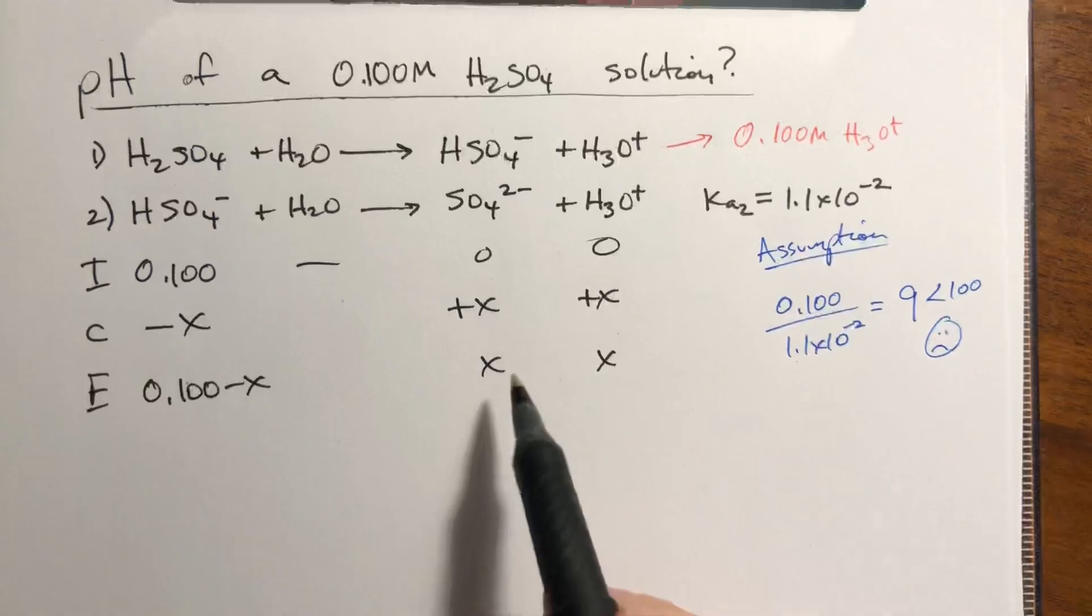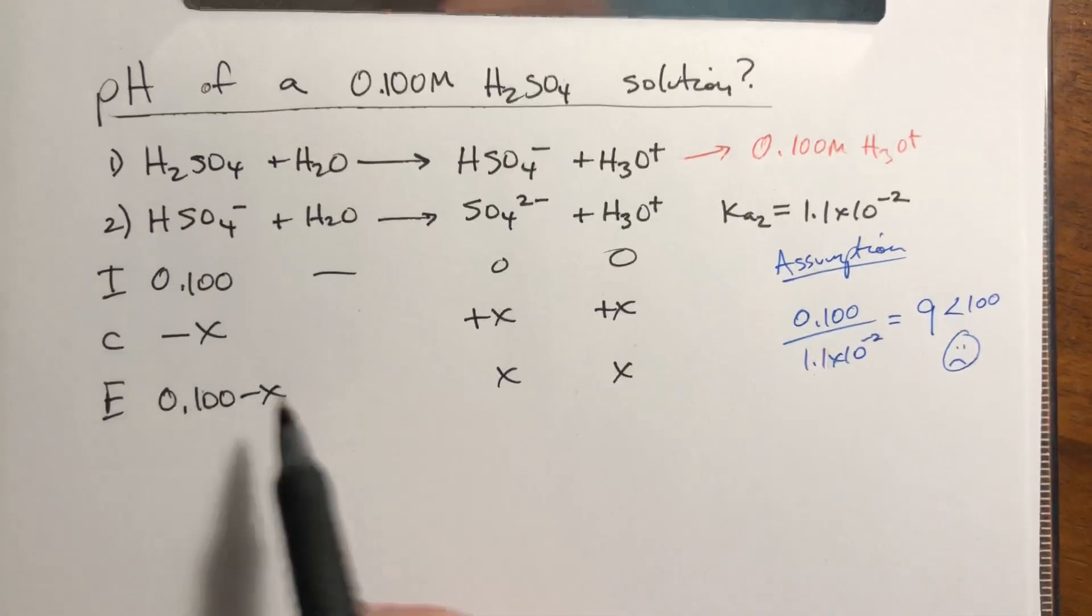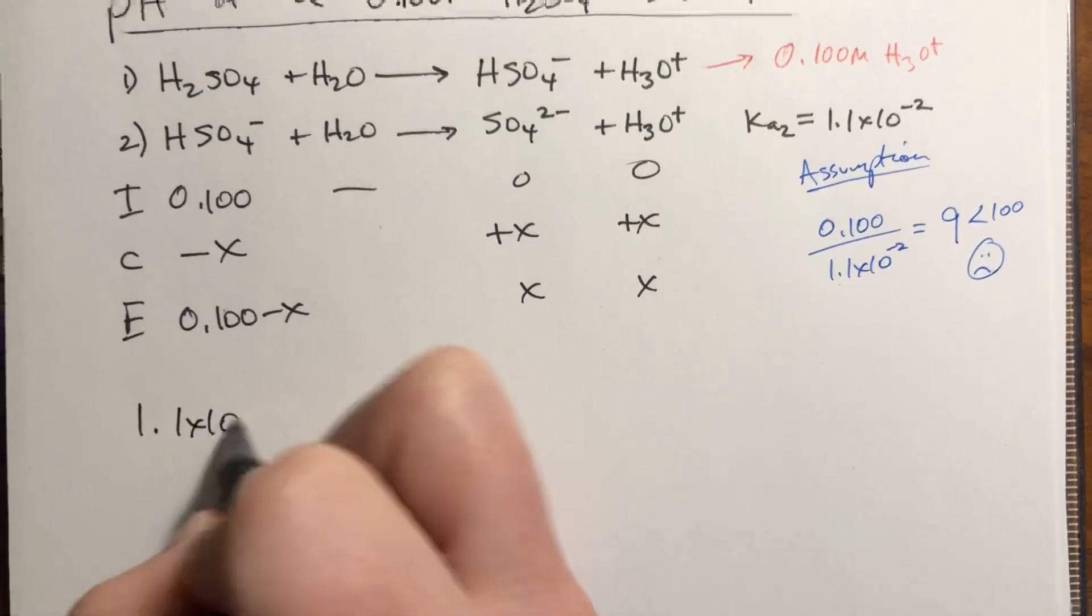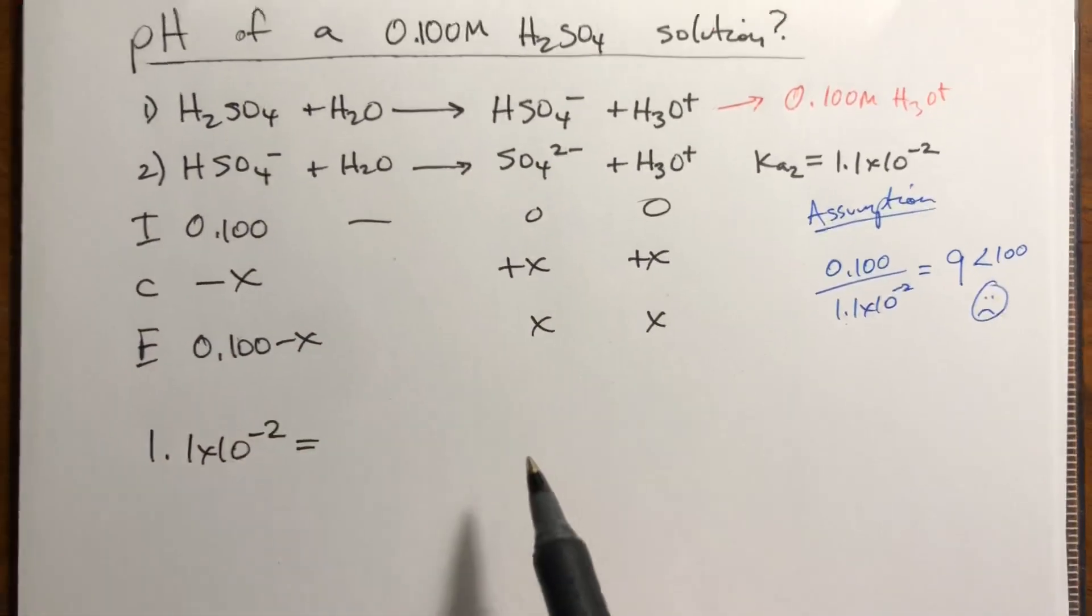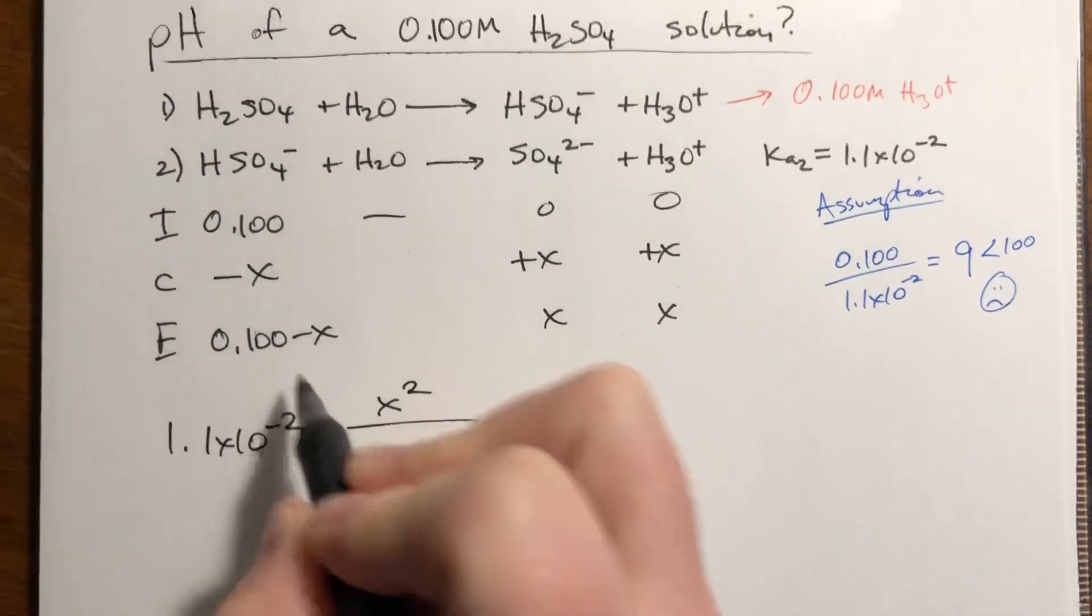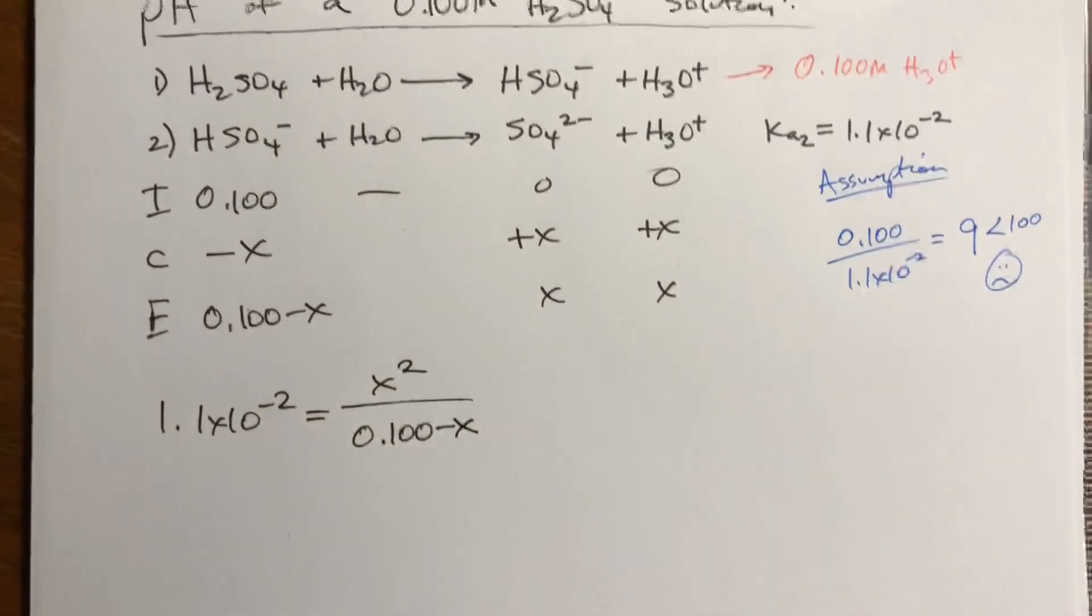We have a Ka value, and Ka is the same thing as Kc, so it's products over reactants at equilibrium. So Ka is 1.1 times 10 to the negative second, and products over reactants is x times x, I'm just going to write it as x squared, and this is 0.100 minus x.